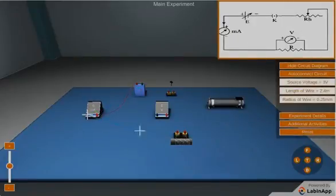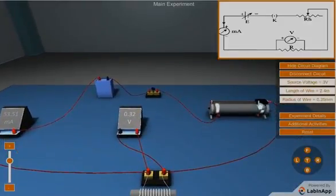Insert the key and slide the rheostat contact to one of its extreme ends so that the current passing through the resistance wire is minimum.